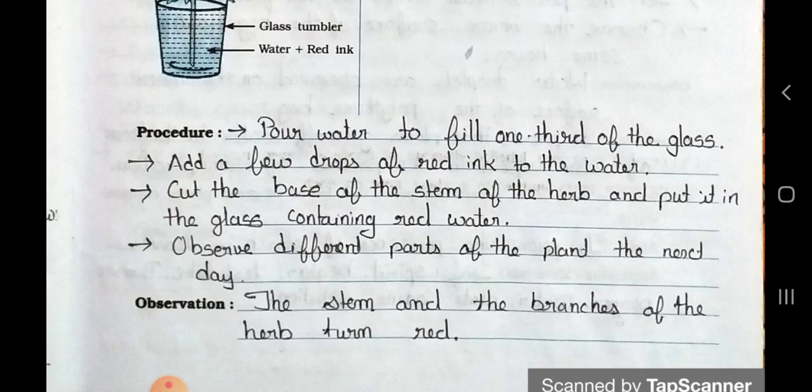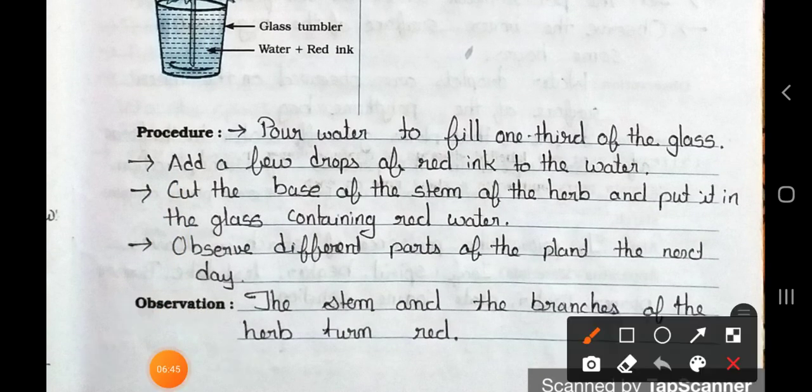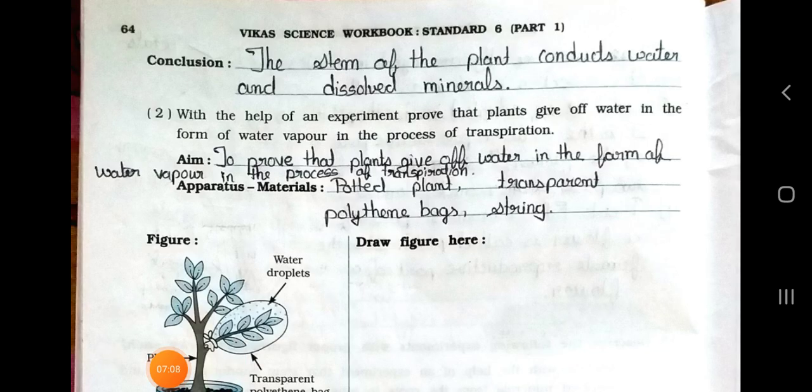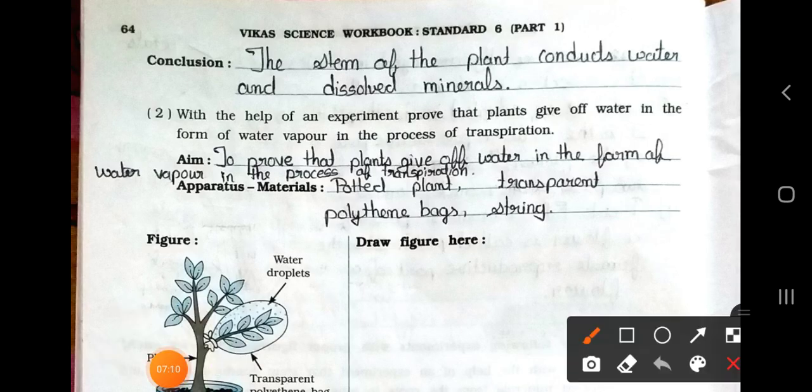See the procedure. Pour water to fill one third of the glass. Add a few drops of red ink to the water. Cut the base of the stem of the herb and put it in the glass containing red water. Observe different parts of the plant the next day. And observation is the stem and the branches of the herb turn red. See the conclusion. The stem of the plant conducts water and dissolves minerals.